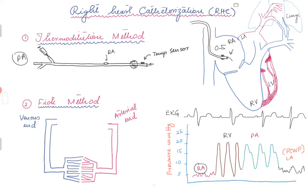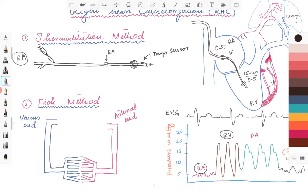As you push the catheter down it goes through the tricuspid valve and reaches the right ventricle. Once in the right ventricle you will see the waveform change significantly — you'll see an upstroke and downstroke without any notch, and the diastolic pressure should ideally be equal to the right atrial pressure. The systolic pressure in the right ventricle can be somewhere between 15 to 20, and the diastolic is close to the right atrial pressure. This is how the waveform will look as seen in the graph.